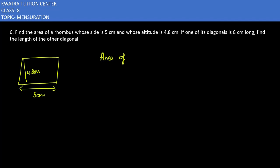Area of rhombus is equal to base into altitude. Base is 5, altitude is 4.8. 5 into 4.8 is 24 centimeter square. Now for the area of rhombus, you have to take the other way using the diagonal formula.